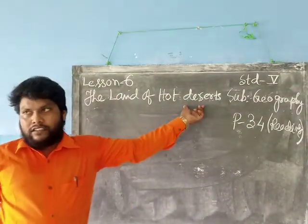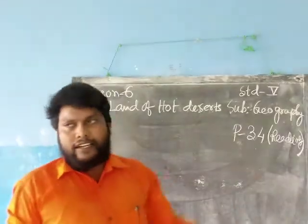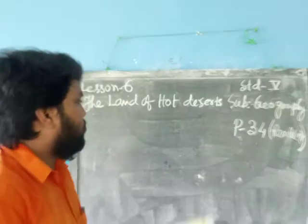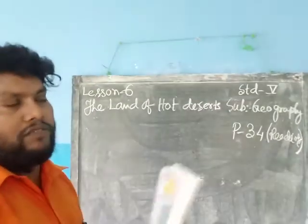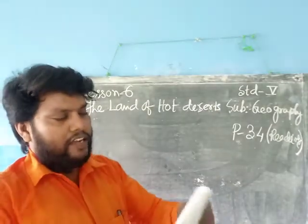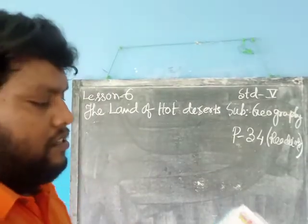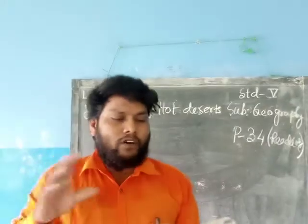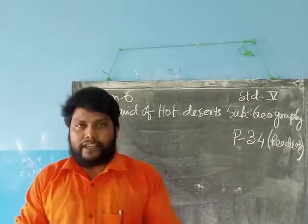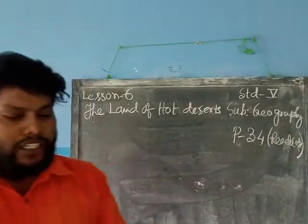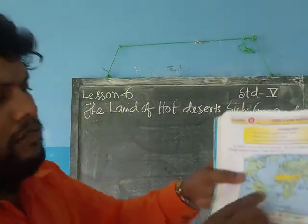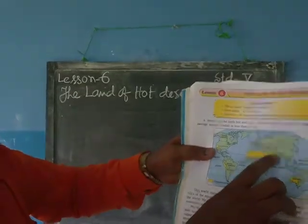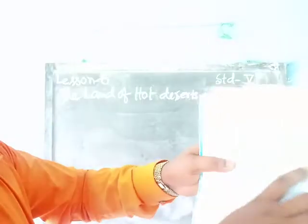This term denotes that the place is very hot. So at first everybody open your book, page number 34. Just I am showing a map — the learning points. The hot desert regions of the world mainly show the area. Now today we will discuss on the basis of this region.